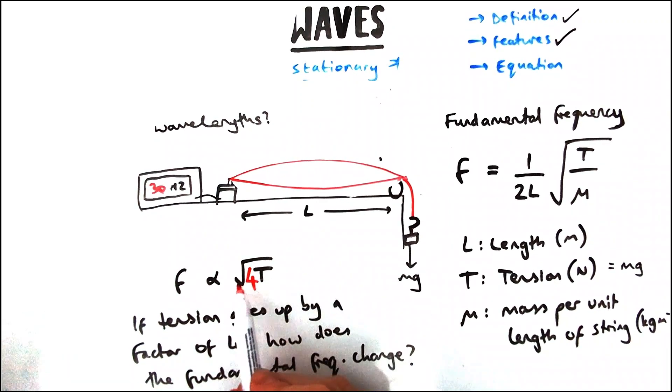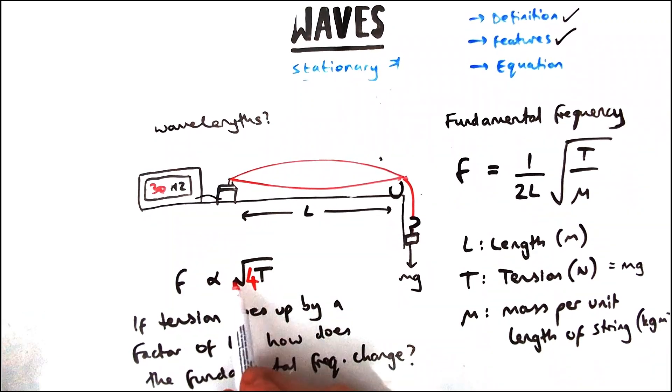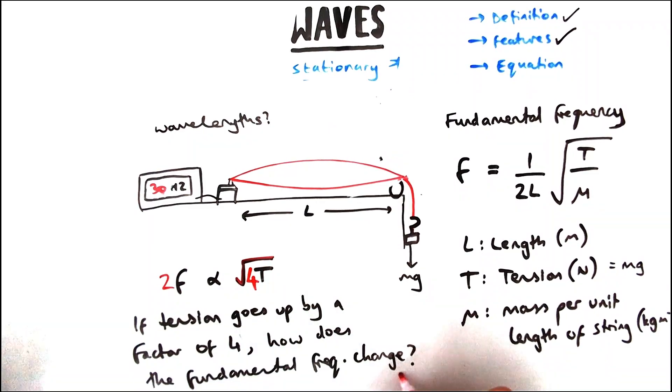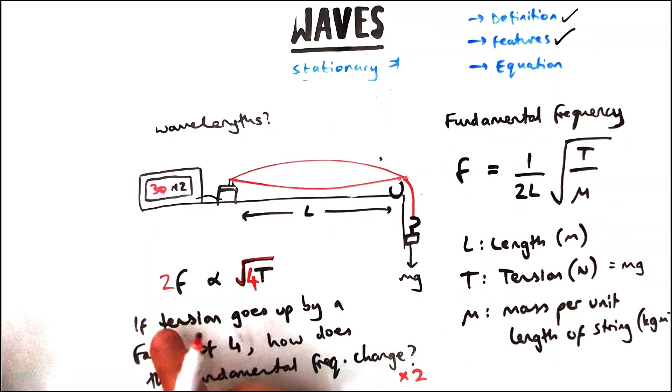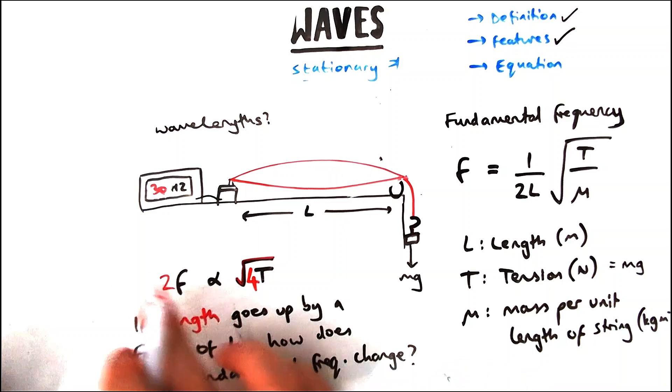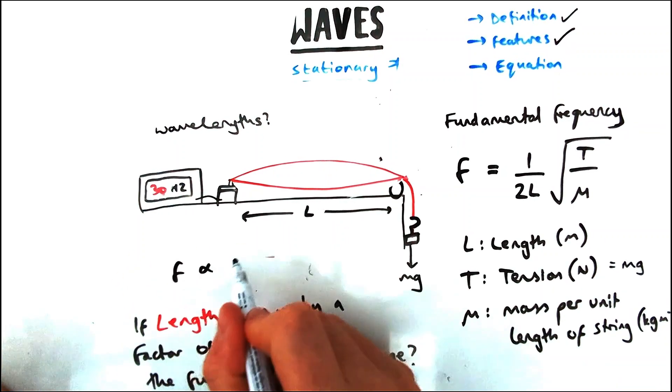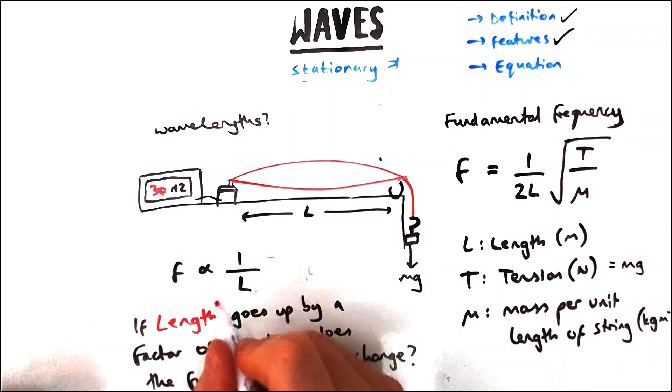Let's say I was to change the length this time by a factor of four. How would the frequency change? Well, these two are inversely proportional, so four times the length means the frequency goes down by a factor of four or by a quarter. So that's how that relationship would work.